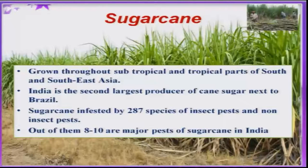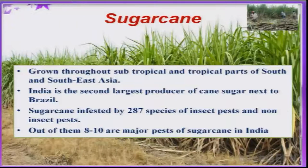Sugarcane is one of the important commercial crops. It is grown throughout the country and India is the largest producer of sugarcane and also sugar in the process of its production. It is going to encounter many problems, among them insect pests are major ones. As many as 200 species of insects have been recorded on sugarcane, but only few insects are quite important in reducing the yield.